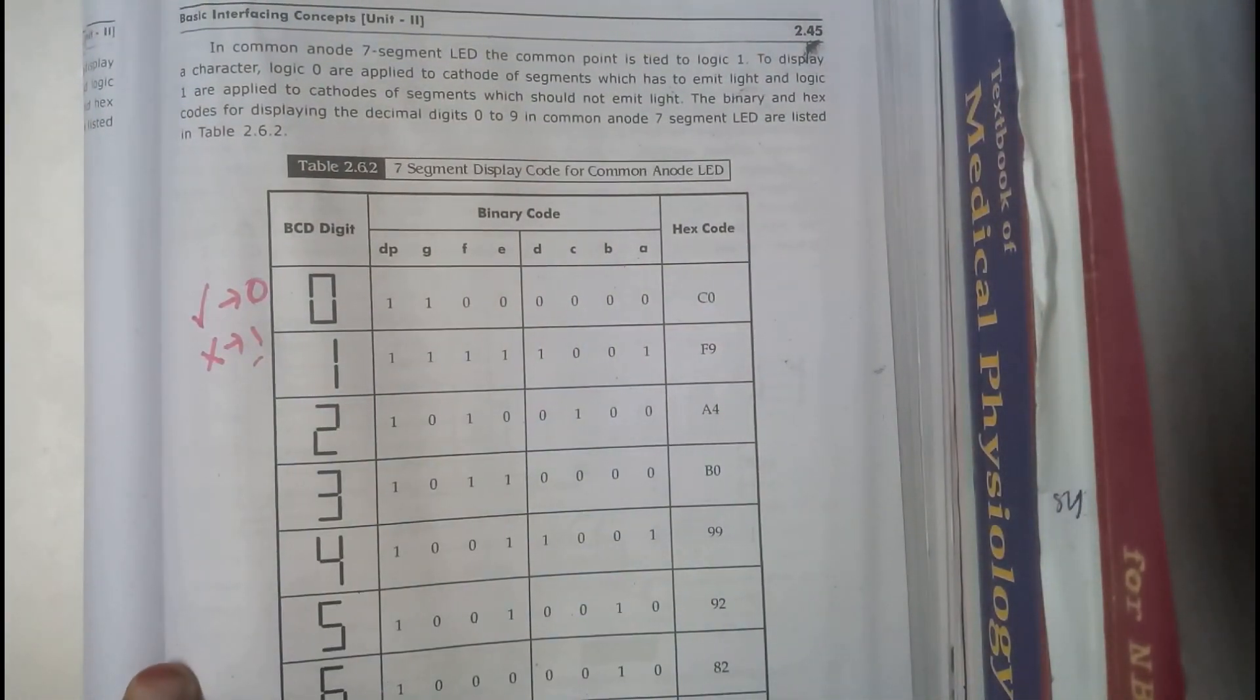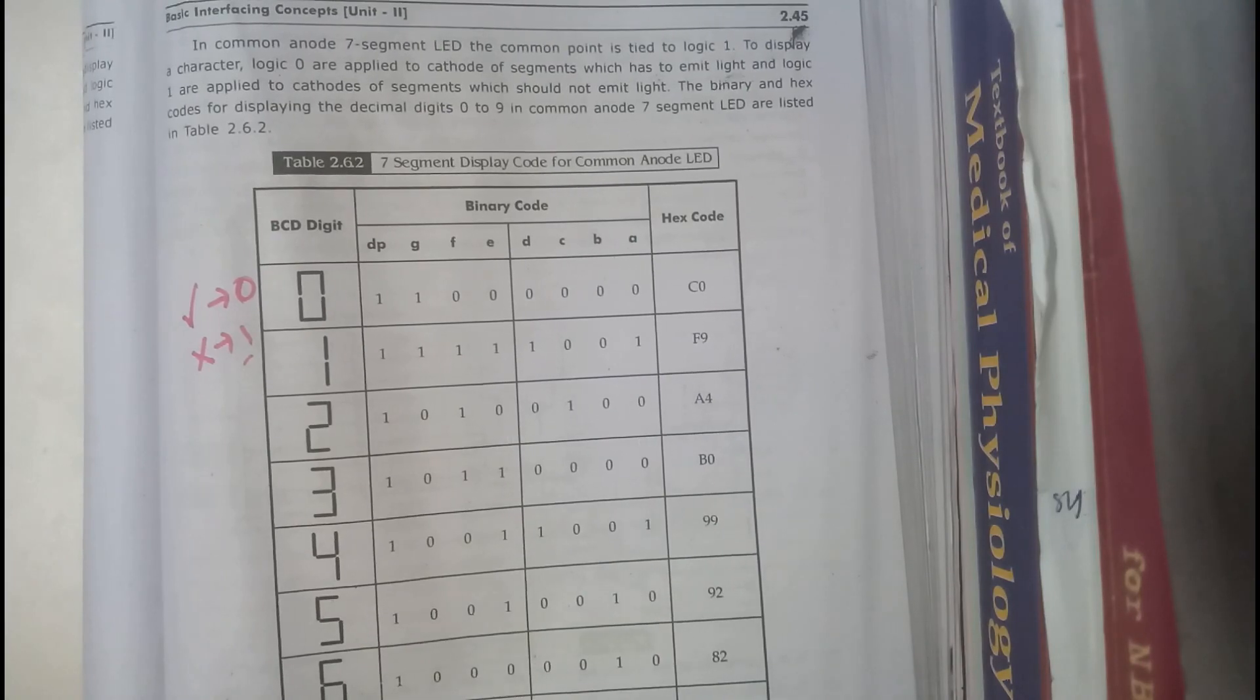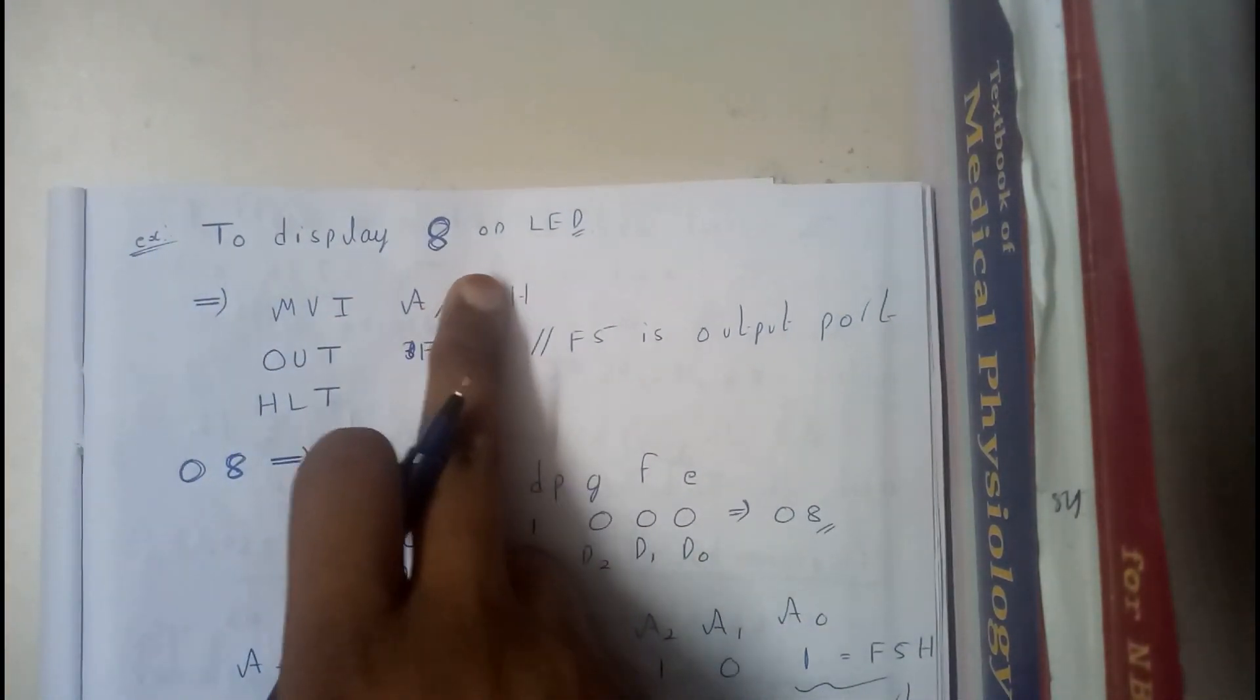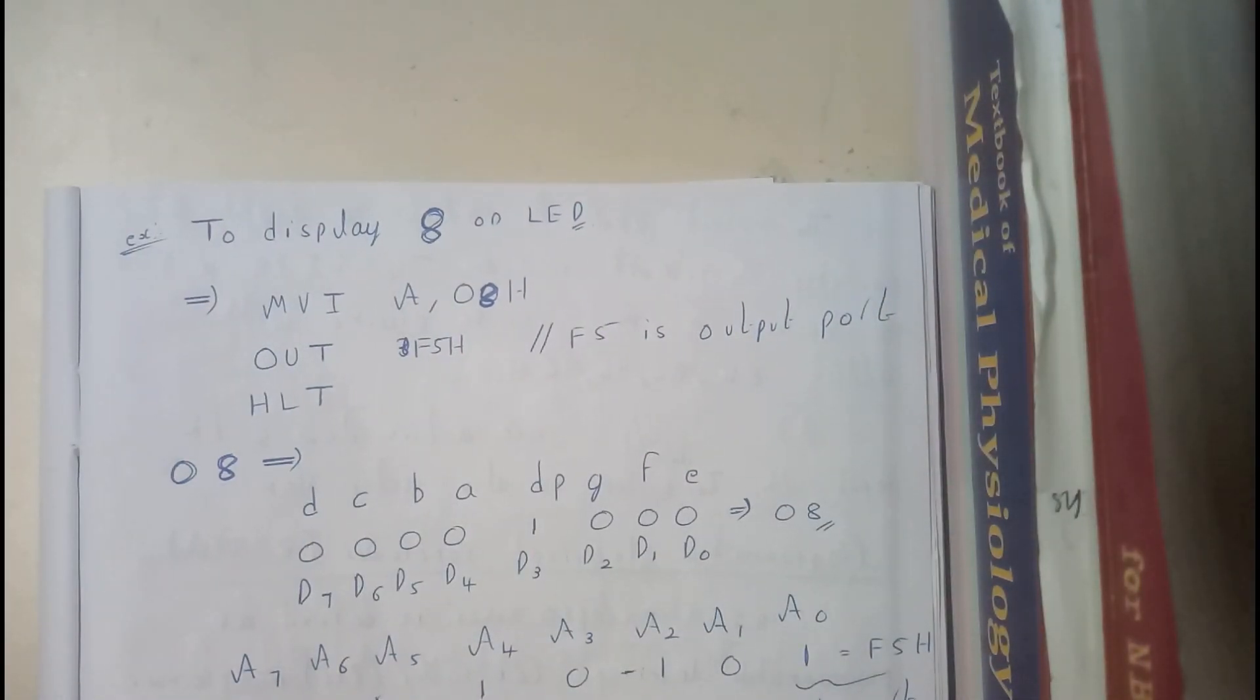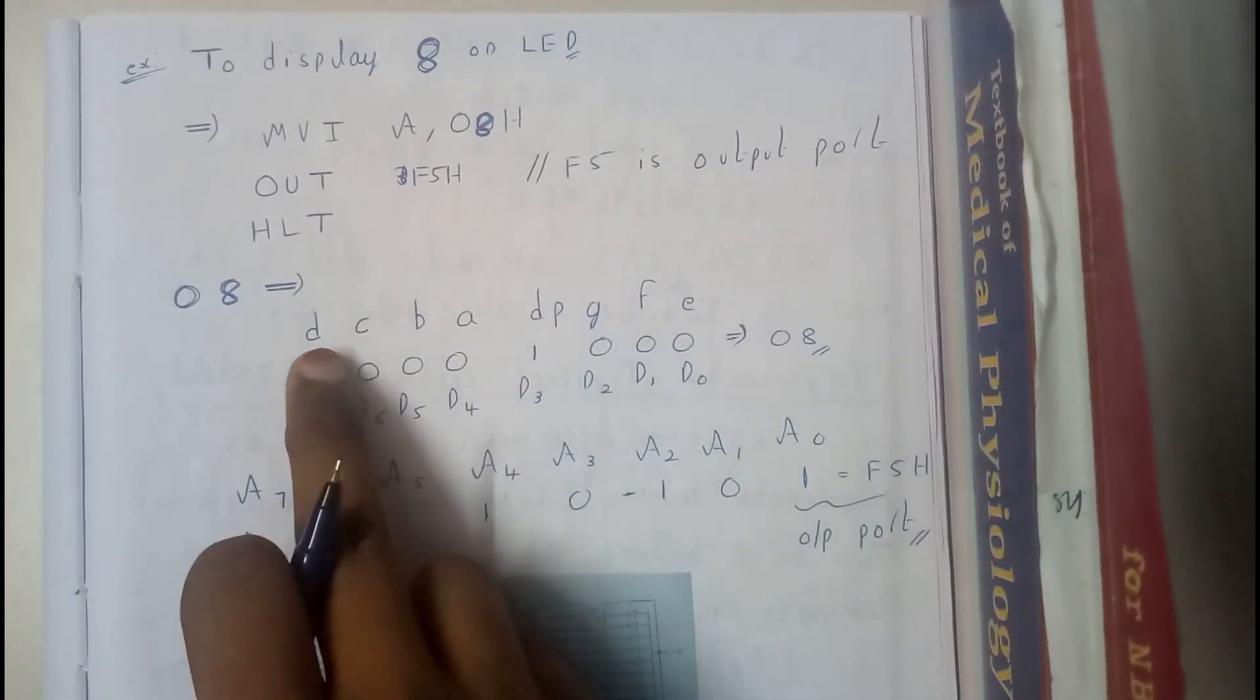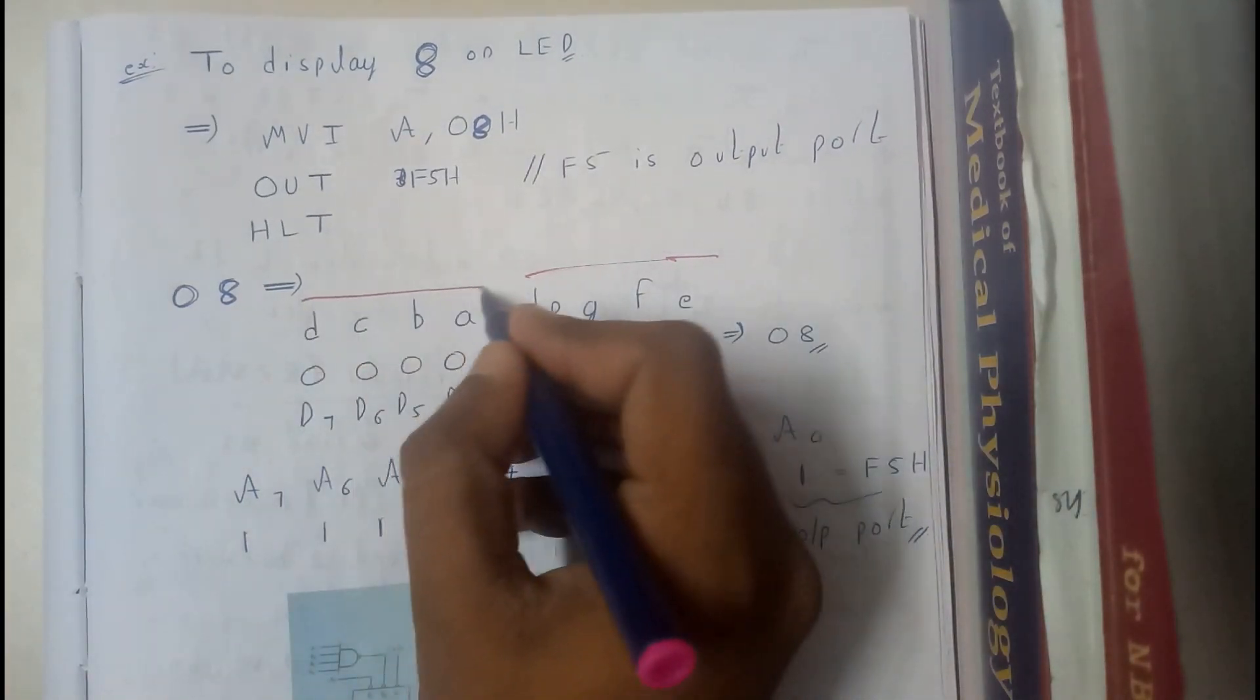So now I hope everyone got a small idea on this. If you are interested we can take an example. Let me open my book, I have just written an example. So to display 8 on the LED, what we should do? Move A comma zero eight hits. Eight, guys. What will be the order? DP, G, F, E. Okay, this is what we are writing, is that the order correct? So this should be the first part and this will be the second part, right?